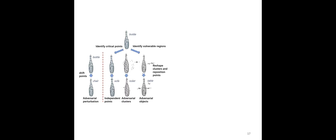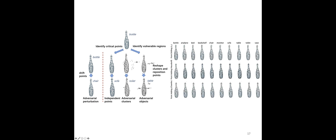Here you can see examples where these objects all look like a bottle to humans, but different adversarial strategies are applied — shifting some points, adding independent points, or adding adversarial clusters around the original object. All of them can be misrecognized by PointNet as either a chair, sofa, or toilet as a targeted attack. More generally, by shifting some points, these bottles can all be misrecognized as arbitrary targets as desired.